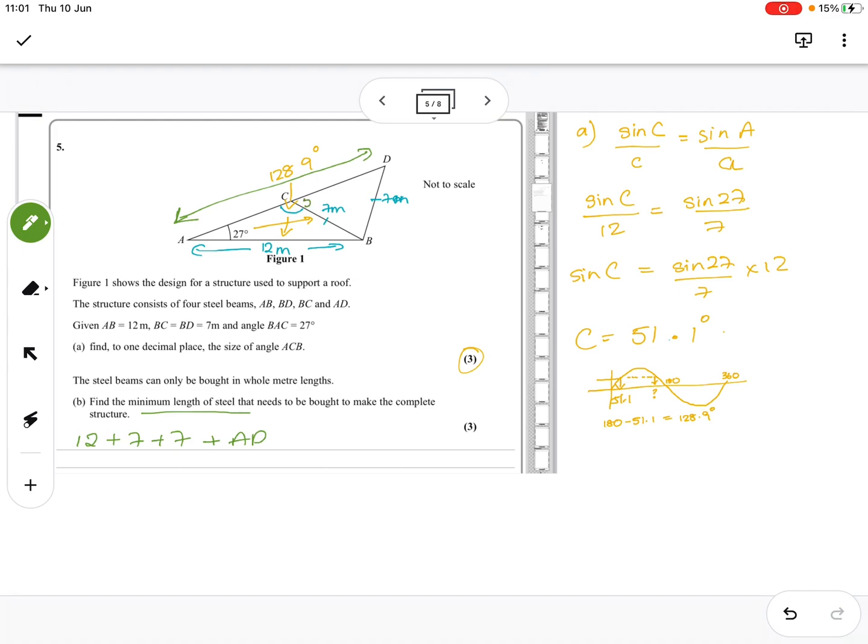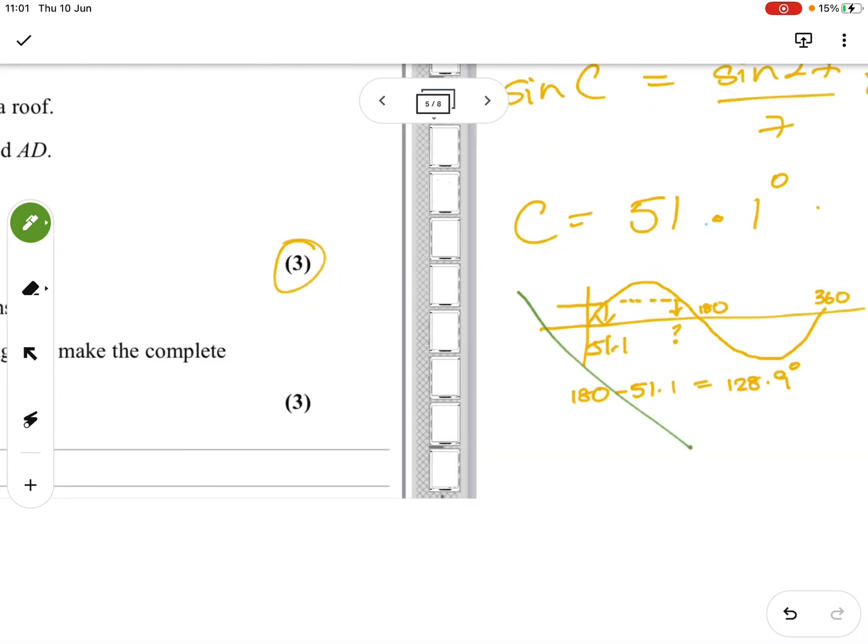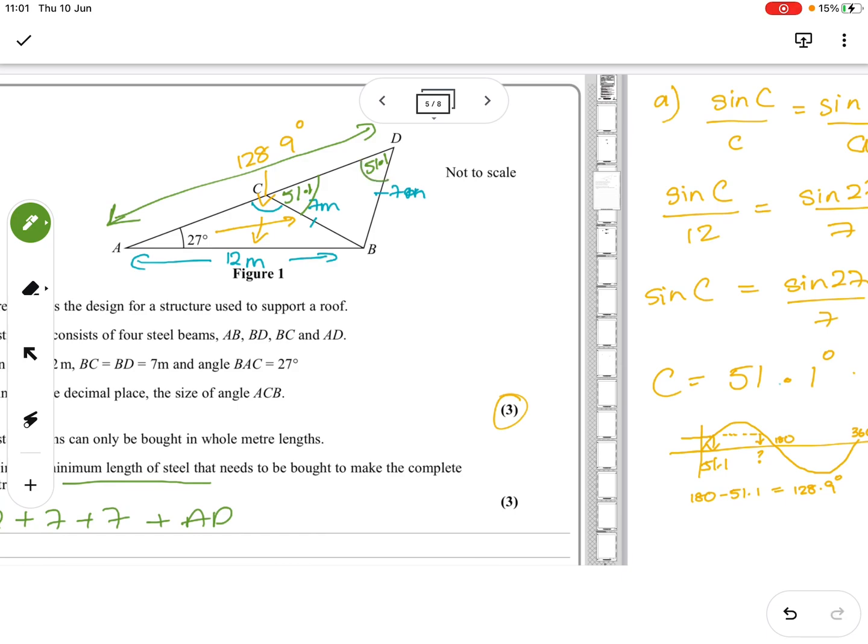So if that one's 128.51, we know that this is 51.1. We also know that this is 51.1. Which means we know that 51.1 times 2 minus 180 will give us 77.8 for this one. Because we've got those two, 128.9 and 27, we can get this one, which is 24.1, which means that that whole angle is 24.1 plus 77.8, which gives us 101.9. Okay, the whole of that angle B.